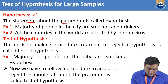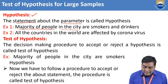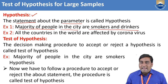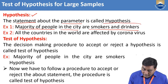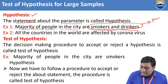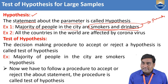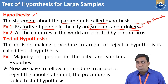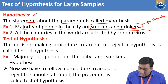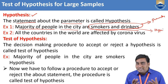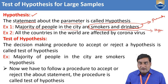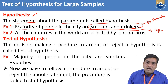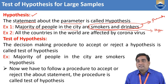For example, suppose I say majority of people in any city are smokers and drinkers. This is a statement about the particular parameter — smoking and drinking. I passed a statement about this parameter, and therefore this statement is known as a hypothesis.